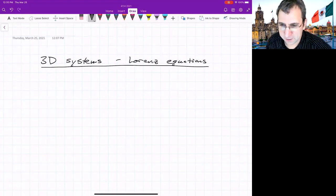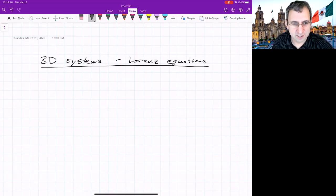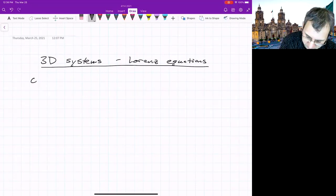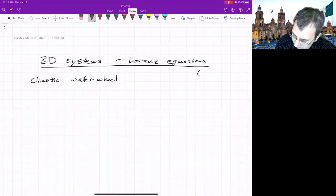There's some simpler systems that people have looked at that kind of show the same behavior. I will say something about how the Lorenz equations are derived. It's a simplified model of convection rolls in the atmosphere. But before that, we could talk about the chaotic water wheel. It's chapter nine, Strogatz.